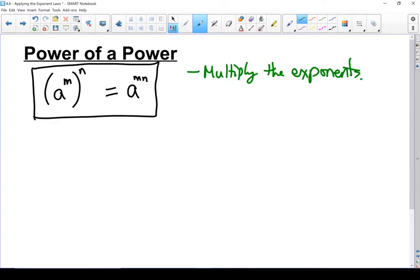Let's go through an example. x squared all to the power of 4. My base stays as an x. I'm going to multiply those two exponents. I'm looking at 2 times 4 which is x to the power of 8.